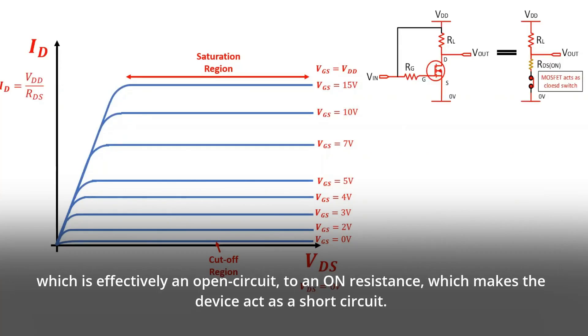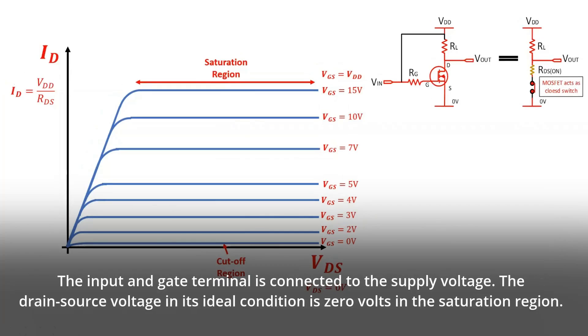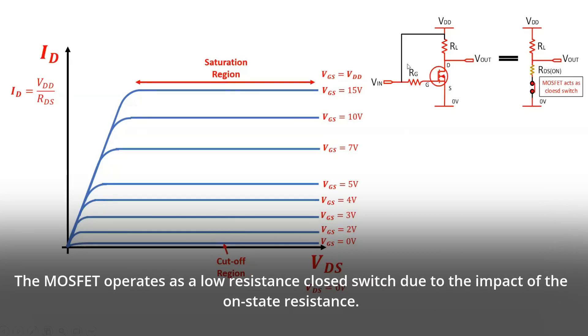The input and gate terminal is connected to the supply voltage. The drain source voltage in its ideal condition is zero volts in the saturation region. The MOSFET operates as a low resistance closed switch due to the impact of the on-state resistance.